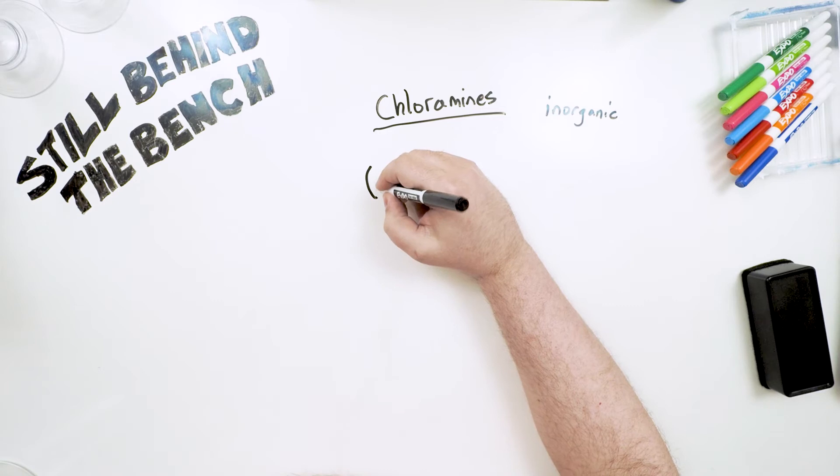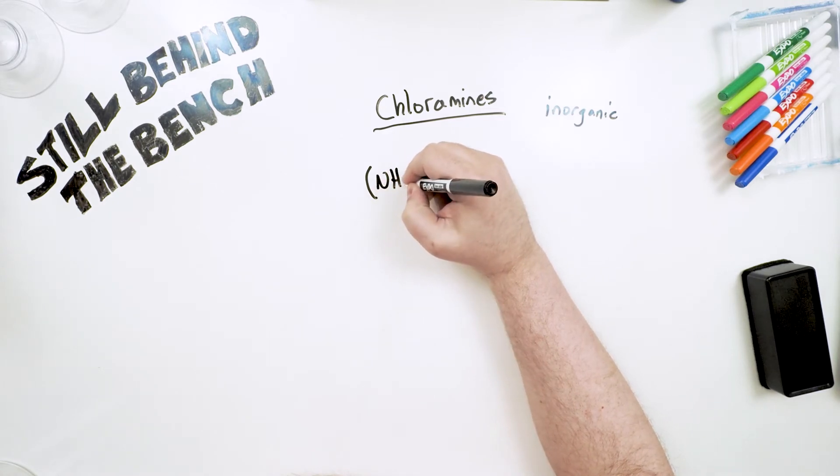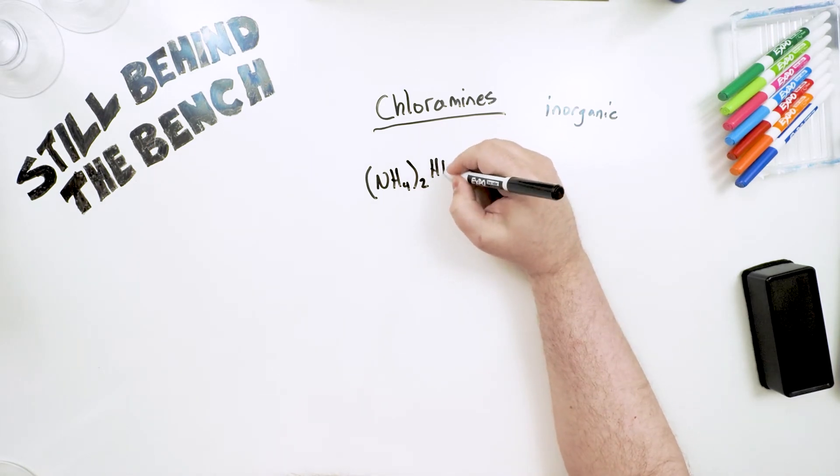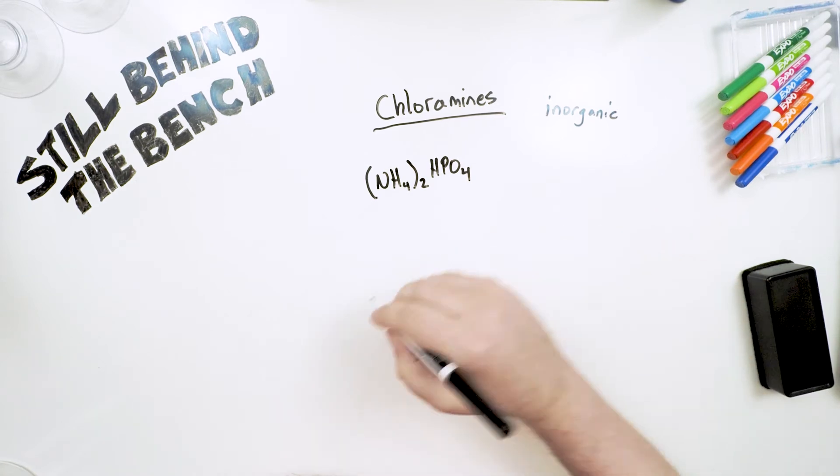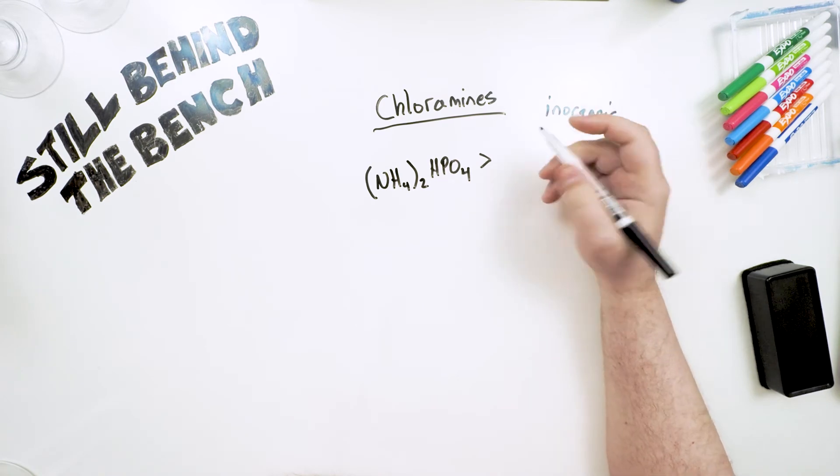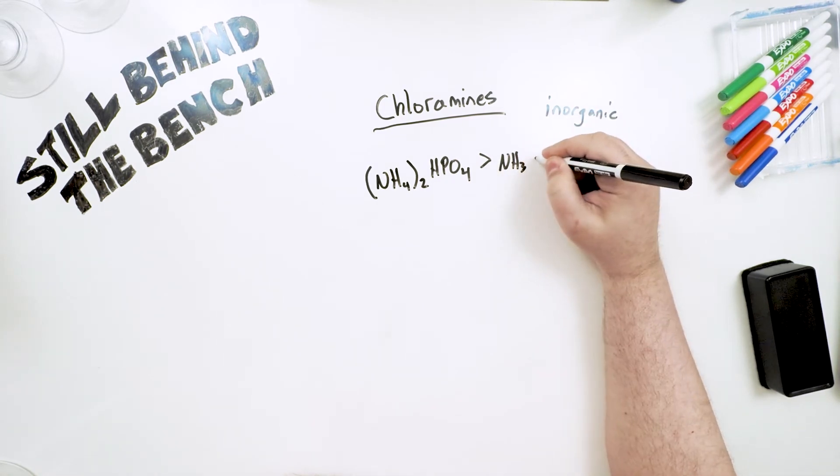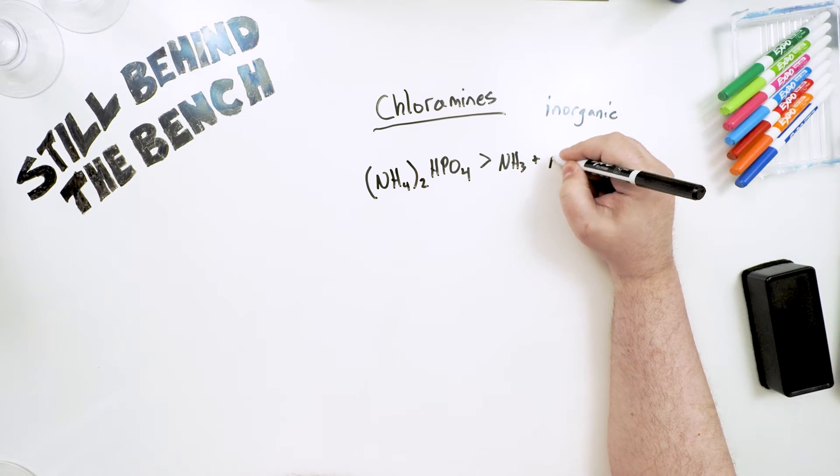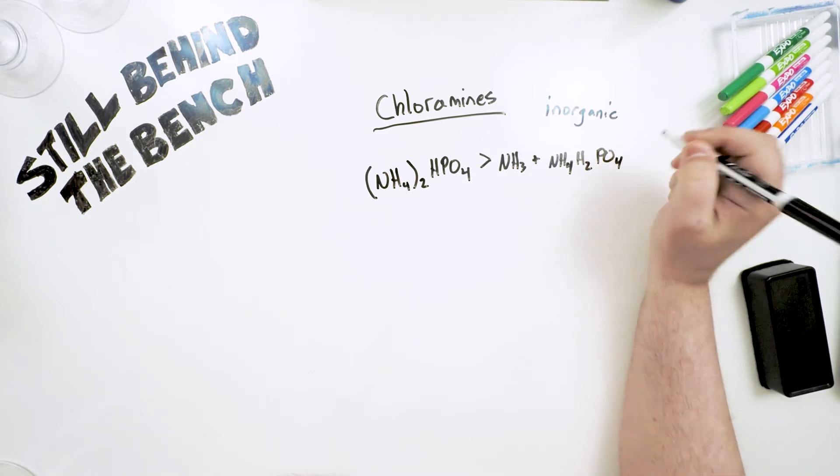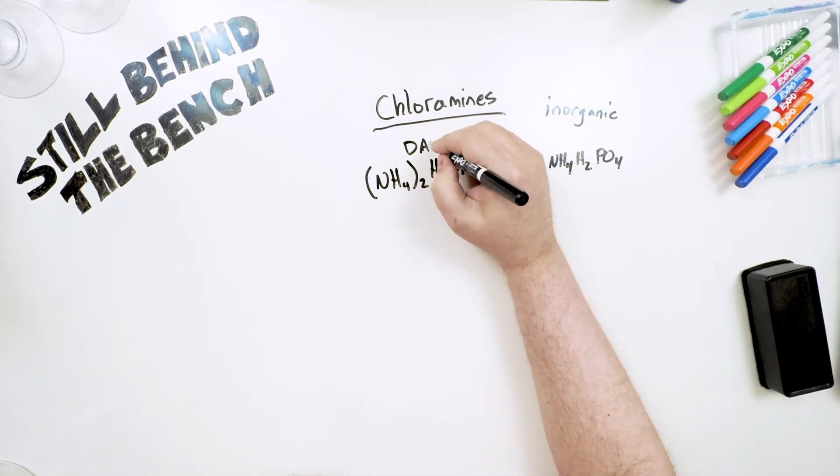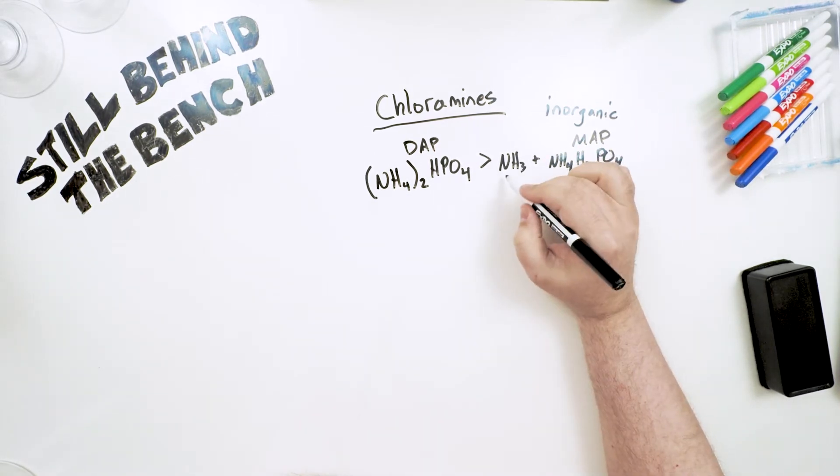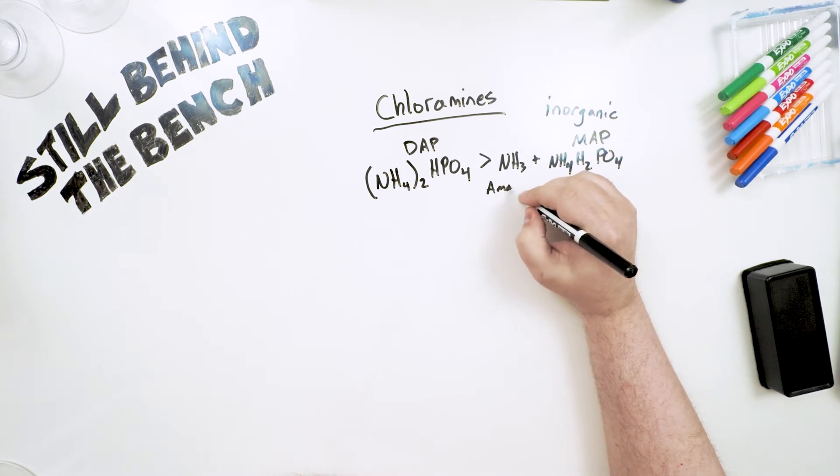Okay. So we had our diammonium phosphate. This is its chemical formula. When you put it into water, it disassociates into two different compounds. NH3 and NH4H2PO4. So this is our diammonium phosphate. This is monoammonium phosphate. And this one is ammonia.